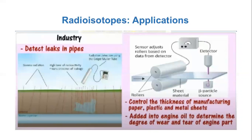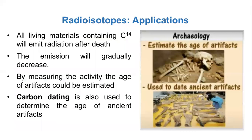Radioisotopes find wide applications in industry as well. They help in detecting leaks in pipes and are used to control the thickness of paper, plastic, and metal sheets during manufacture — beta particle sources are used to measure the thickness. They are also added to engine oils to determine the degree of wear and tear of engine parts.